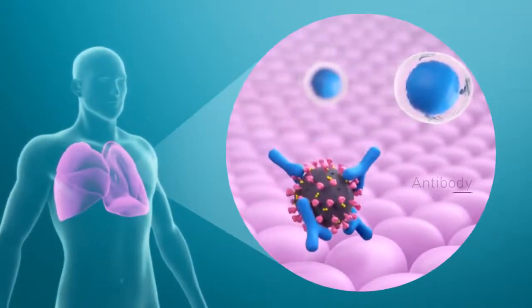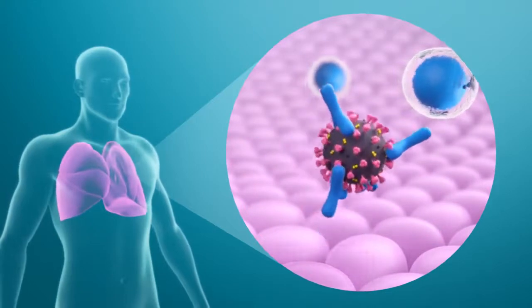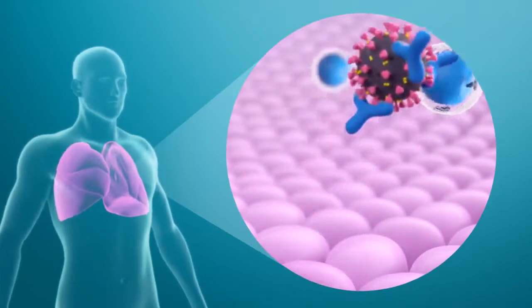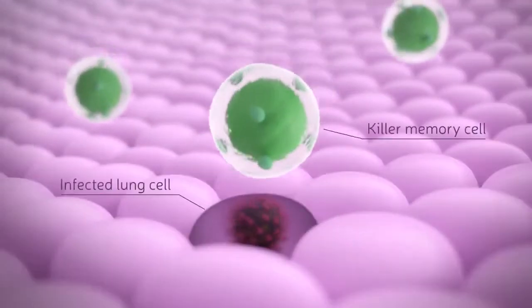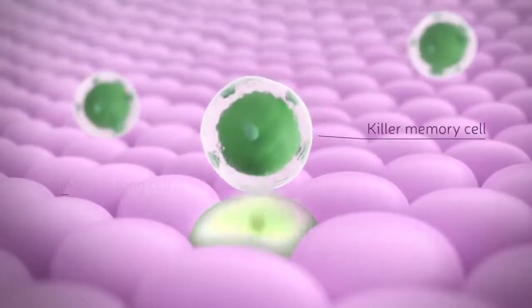Antibodies cover the virus and thus prevent it from binding to our cells to cause infection. Cells that have already been infected are ruthlessly destroyed by killer cells, along with the viruses inside.